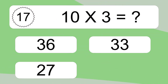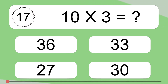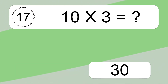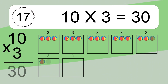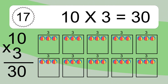Ten times three equals what? Ten times three equals thirty. We have ten boxes, and each box has three colorful balls inside. If you count all the balls in all the boxes together, you will have ten times three balls. This equals thirty balls.